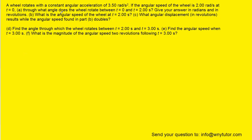In order to find the angle that this wheel rotates between t equals zero and t equals two seconds, we can turn to the angular displacement formula, which tells us that the angular displacement is equal to the initial angular velocity times the time plus one-half multiplied by the angular acceleration times the time squared.